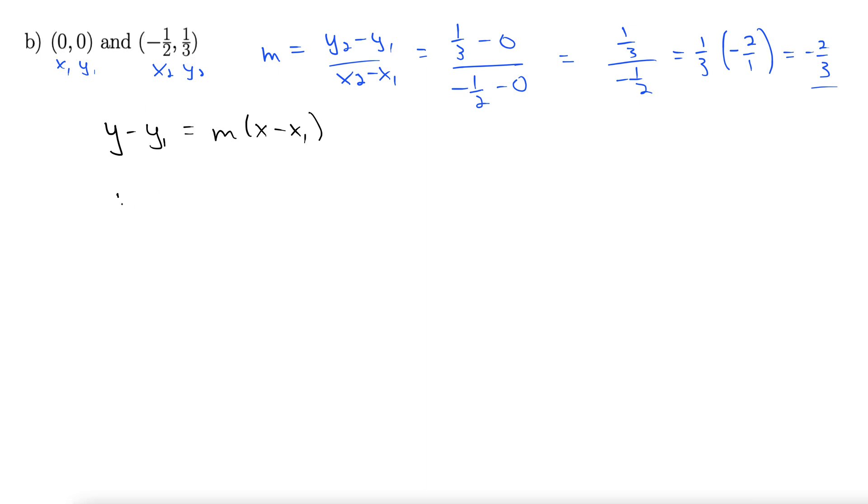That seems much easier to me. Y minus y1, 0, equals m, negative 2/3, times x minus x1, 0 again. Then we just clean this up. Y equals negative 2/3 x. There we go. This is slope-intercept form.